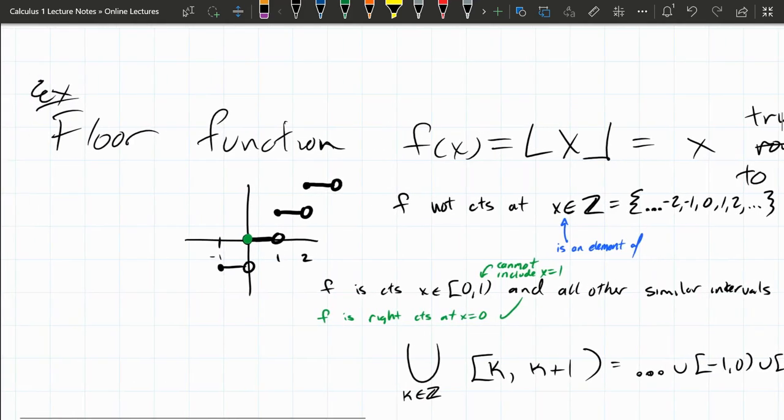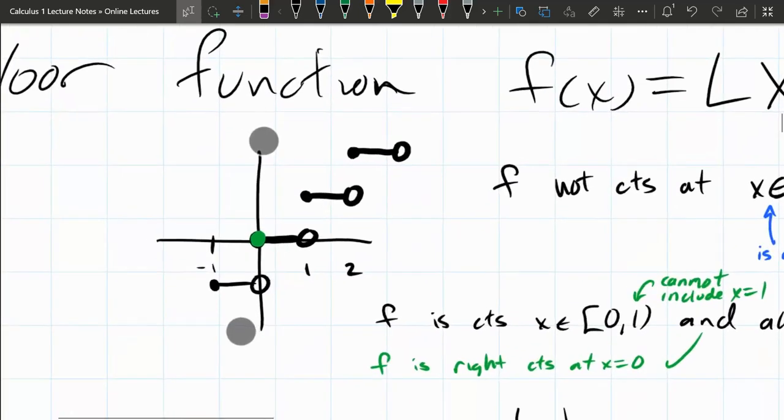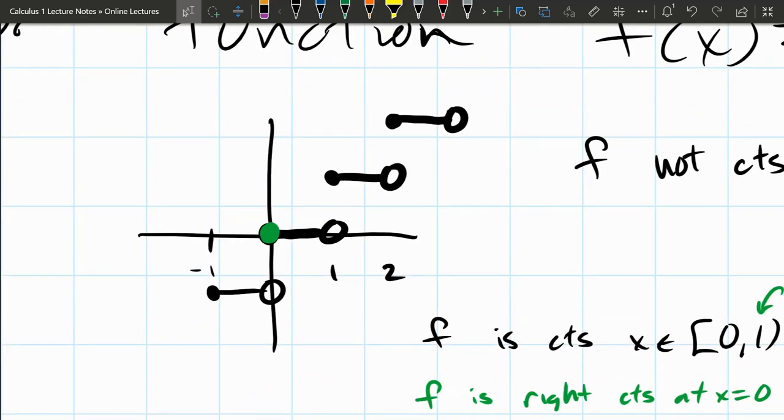The graph right here of the floor function, so between 0 and 1, your y value is 0. As soon as you hit the x value 1, your output becomes y value of 1, which I didn't exactly draw here. Here there's 1, there's 2, so you get this little interval here. And as soon as your x value hits 2, your output, your y value, is 2.